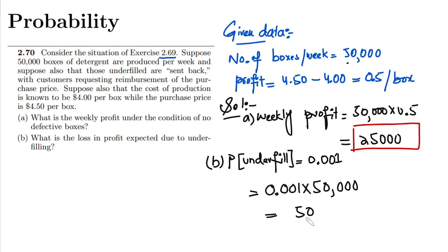be associated with these boxes would be 50 multiplied by $4.50, which is the purchase price per box. Calculating it, I will get $225.